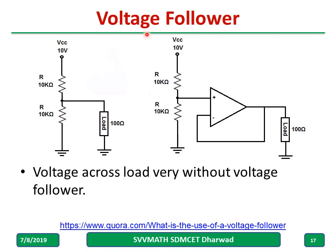To understand the use of the voltage follower: if you connect a 100-ohm load, and measure the voltage at the output of a 10k resistor, the 100-ohm will come in parallel and the total resistance will reduce, hence the voltage will drop. But if you use an op-amp, even with a 100-ohm load — or 1k, 10k, 100k, even 10 ohm — the current and voltage at that point will remain the same. Hence the loading effect will not be there.